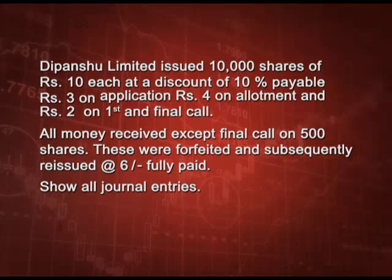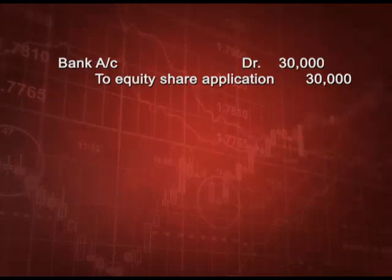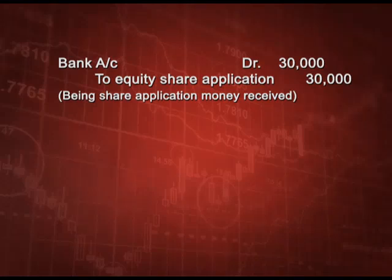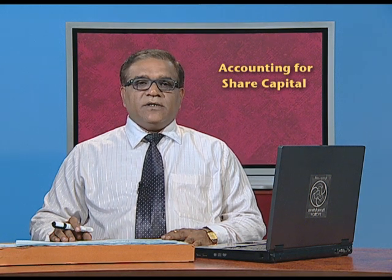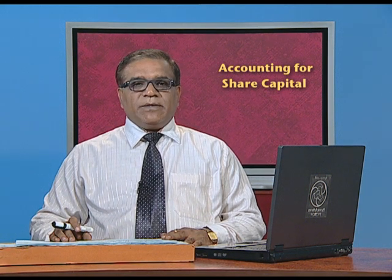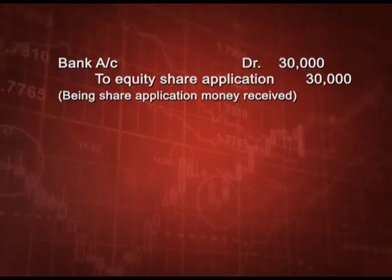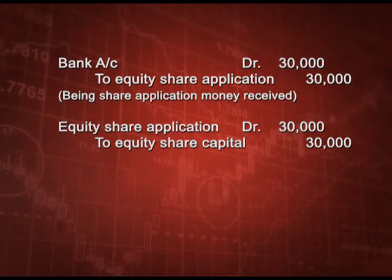The first entry: bank account debit rupees 30,000 (that is 10,000 into 3) to equity share application rupees 30,000, being share application money received. Please note we have to give narrations with every entry. Second entry: equity share application debit rupees 30,000 to equity share capital rupees 30,000, transferring application money to share capital.